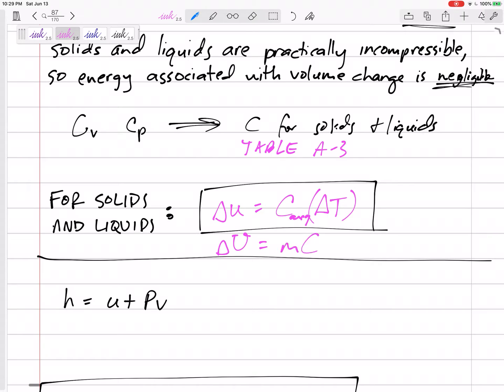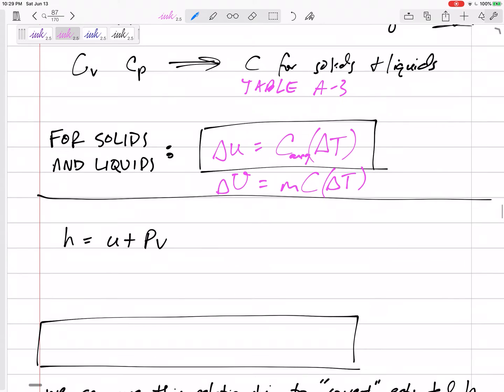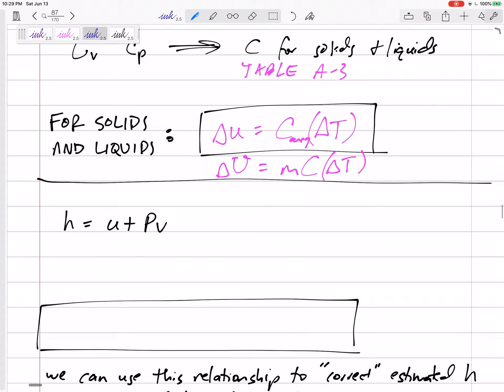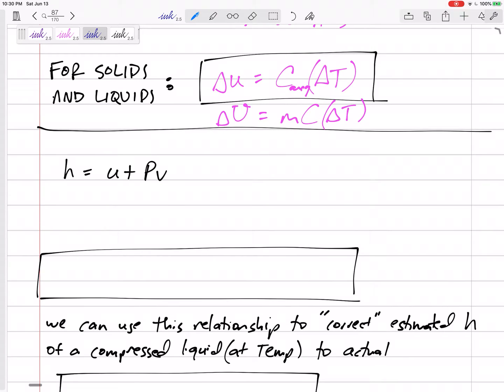Okay, and so briefly, I'll try not to overcomplicate this or undercomplicate it, but we remember that h is equal to u plus Pv. That's just a definition of enthalpy. And so delta h is equal to delta u, and it's almost like taking a derivative and the product rule, but it'd be like delta P times v plus P delta v.